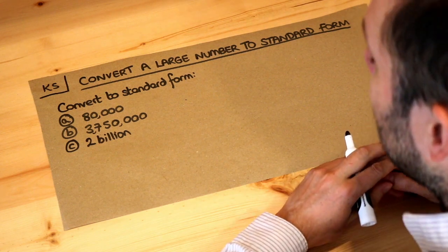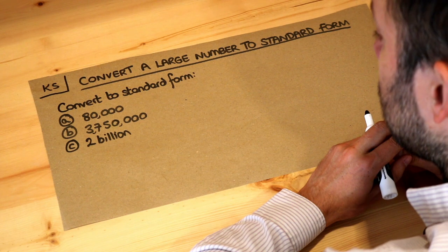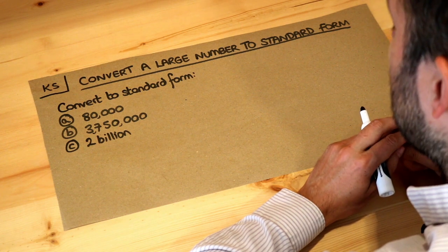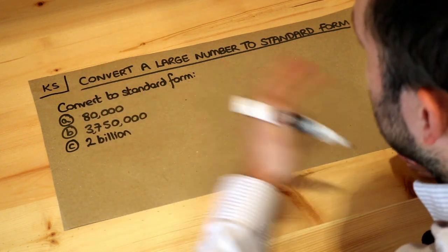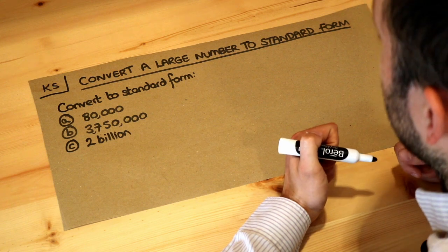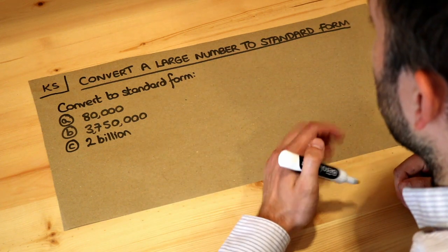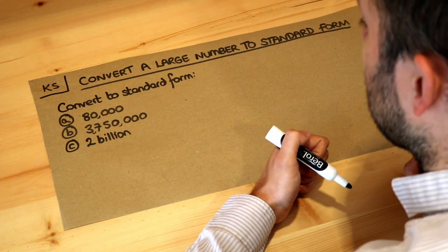Hello and welcome to this Dr Ross Mass key skill video on converting a large number to standard form. Standard form is a way to represent really large numbers without having to write out lots of digits, and it also makes it easier for us to compare two numbers that are really big and have lots of digits without having to try and count the number of digits.